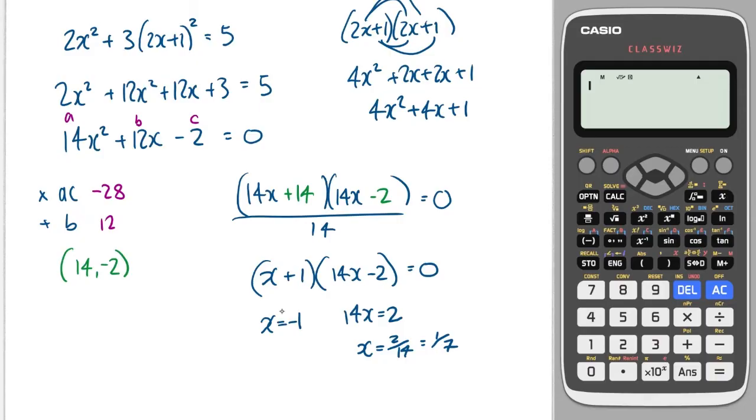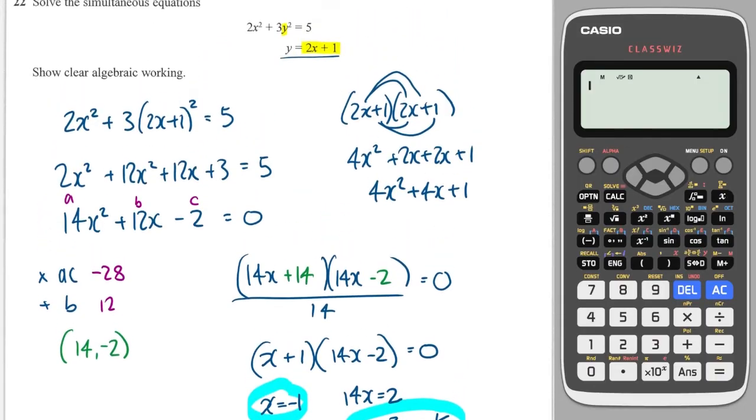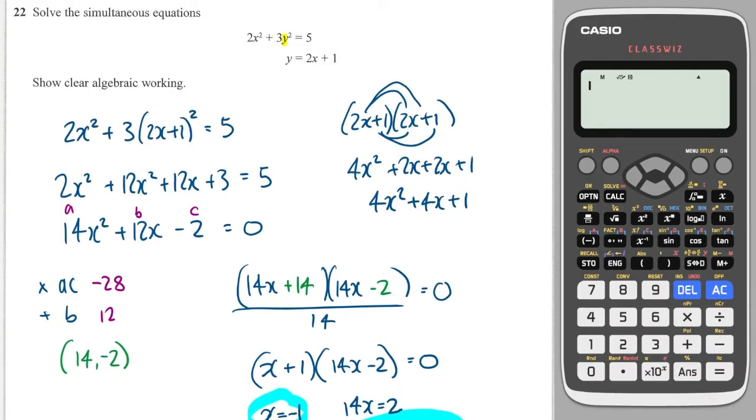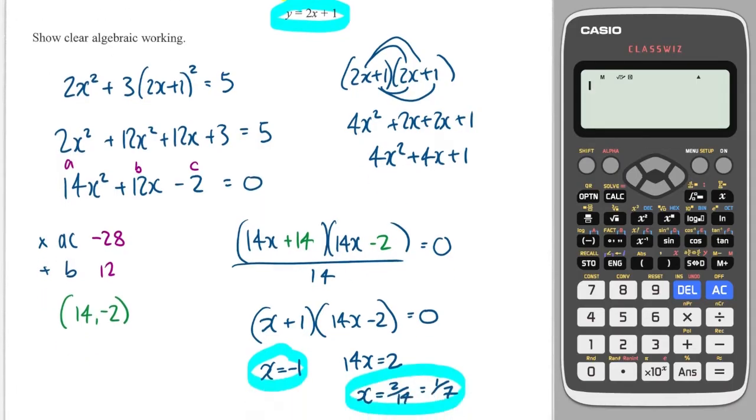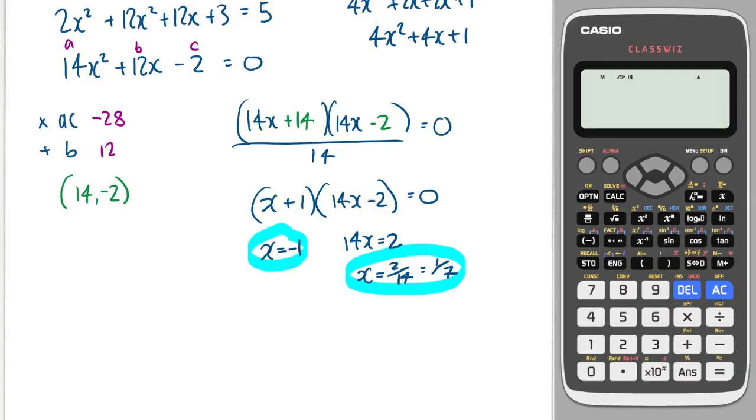I've got my two x values, but now what I need to do is find the corresponding y values. So I go up to the top, and I should have a ready-made formula to work out the y's, and it's right there. I double the x's, and I plus 1. So I go to my calculator, and I double the x, and then I plus 1, and that gives me minus 1. So y equals minus 1. And over here, I add 1 over 7, and I double that, and then I add 1. And that gives me 9 over 7. And we're done.